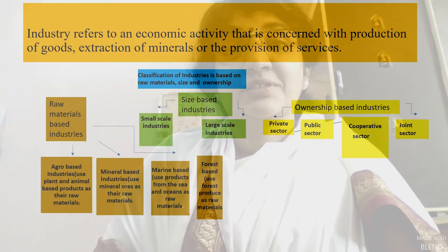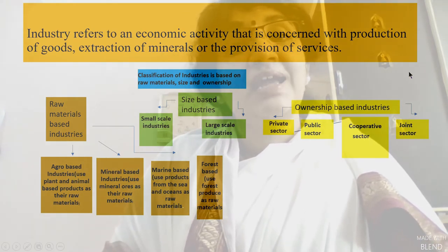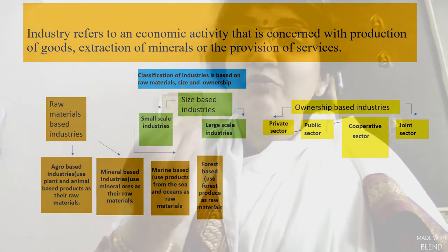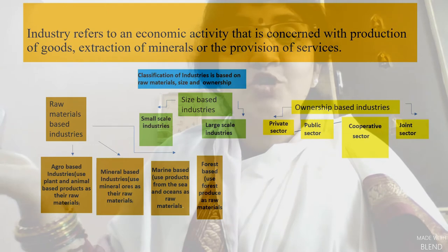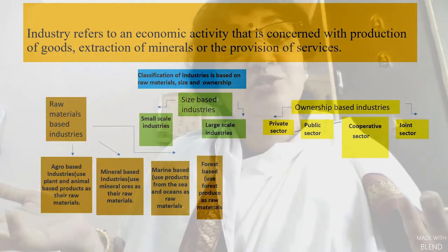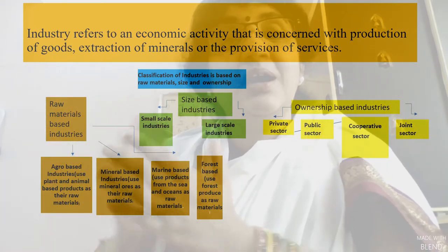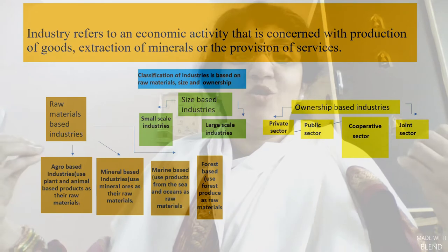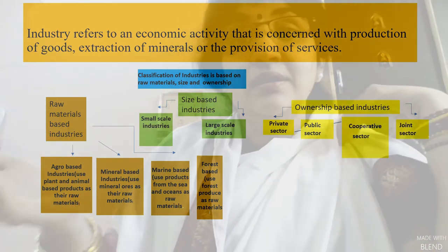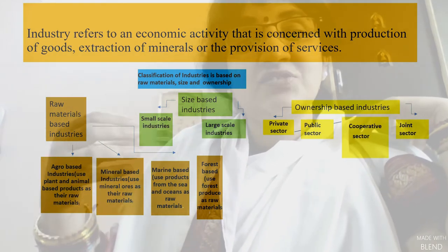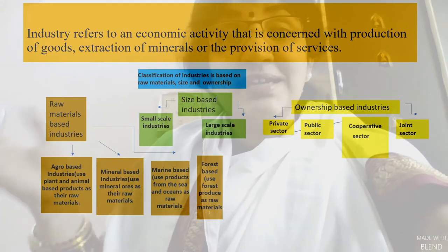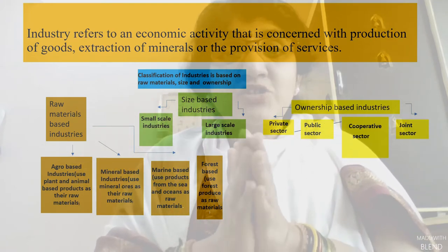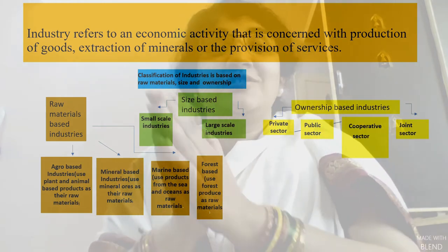They extract zinc, copper, aluminium, iron, and crude steel from the land and soil. These are the major minerals that are extracted and unearthed. Together, these industries are called mineral-based industries, and they form another major sector under the raw materials classification of industries.